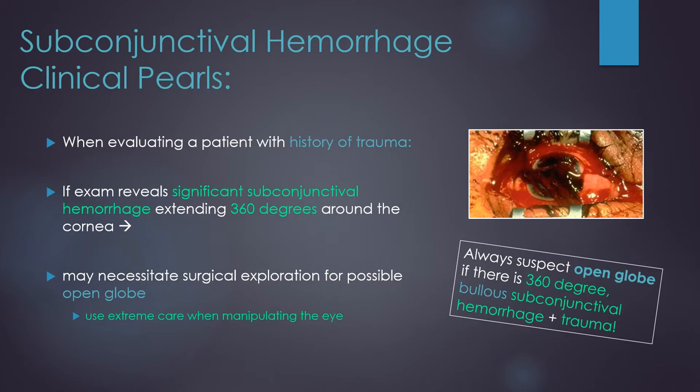Patients with subconjunctival hemorrhage associated with trauma, like the one in case 2, may have a more serious ocular injury. If your exam reveals significant hemorrhage that extends 360 degrees around the cornea, you should have a high suspicion for a possible open globe and the patient may require surgical exploration. As always, if there is any possibility of open globe, use extreme care when manipulating the eye.